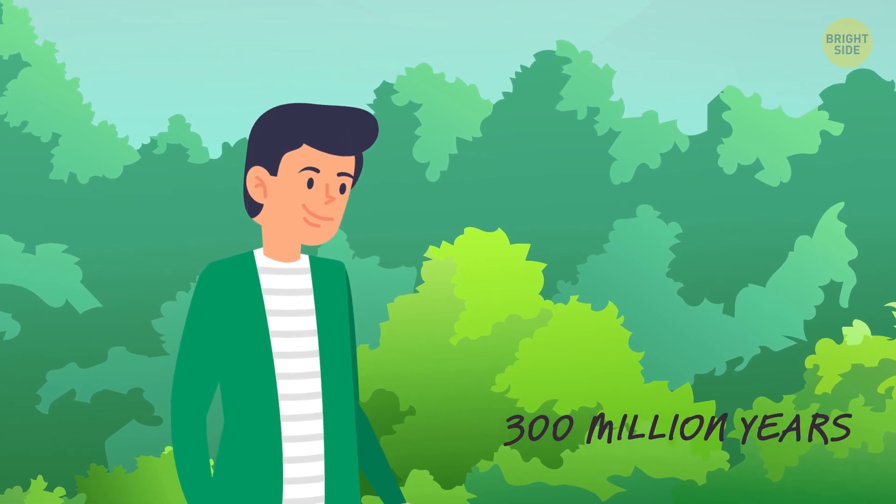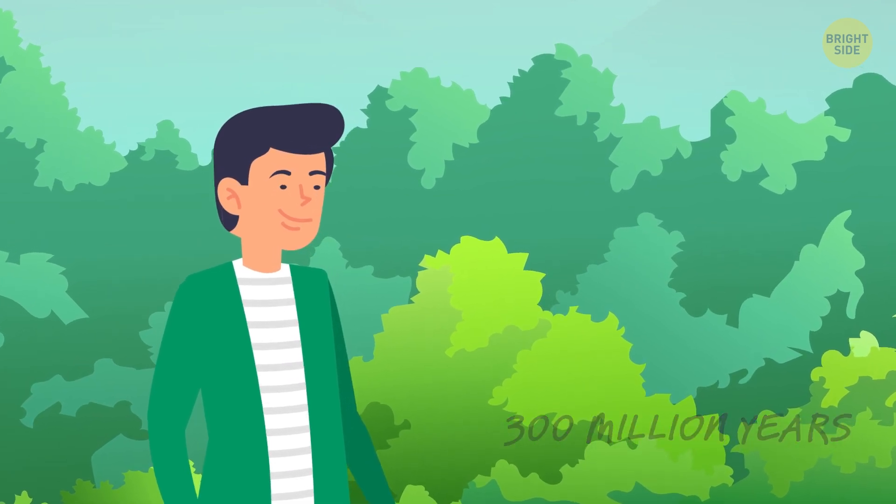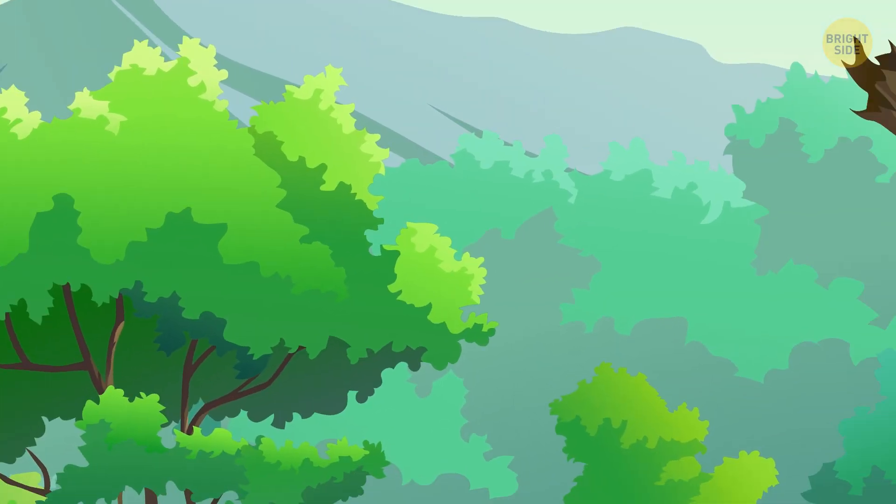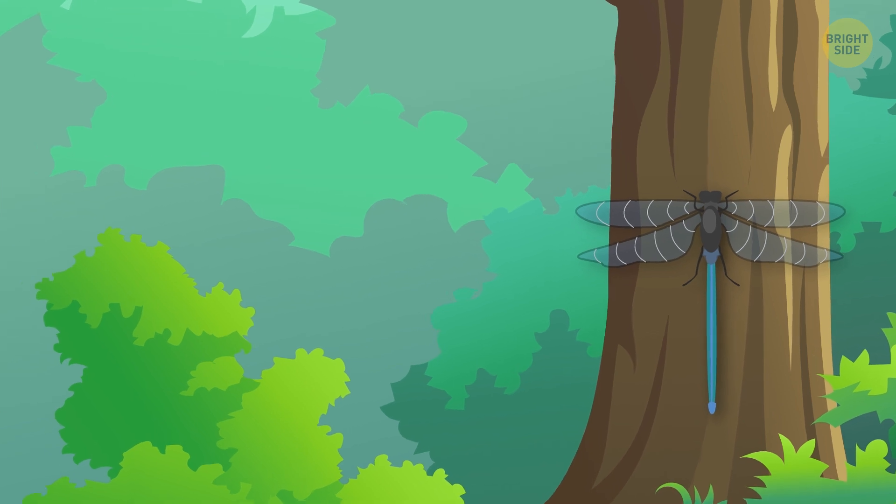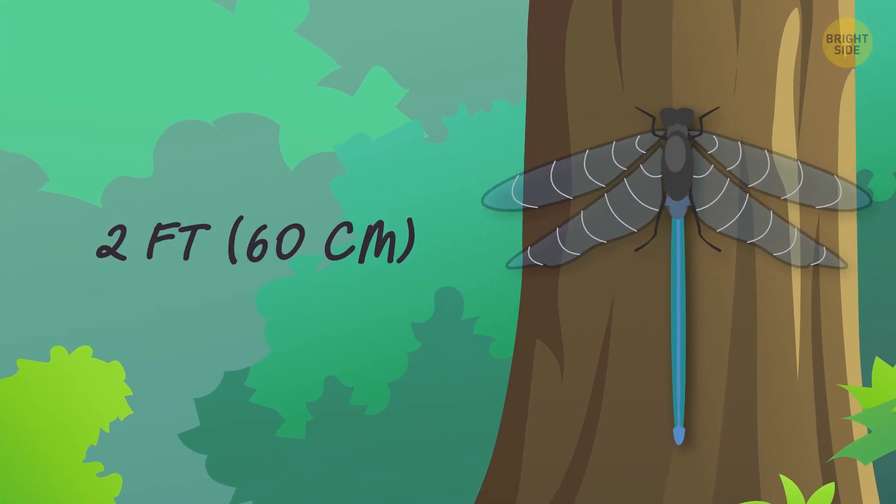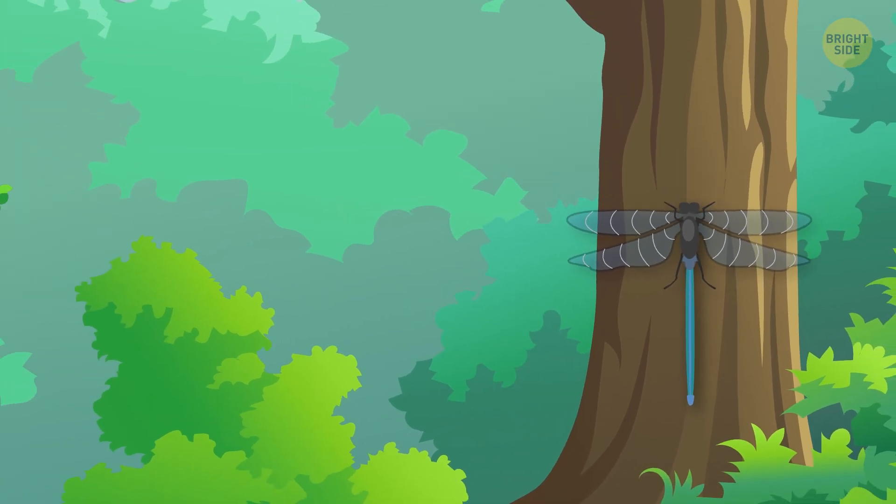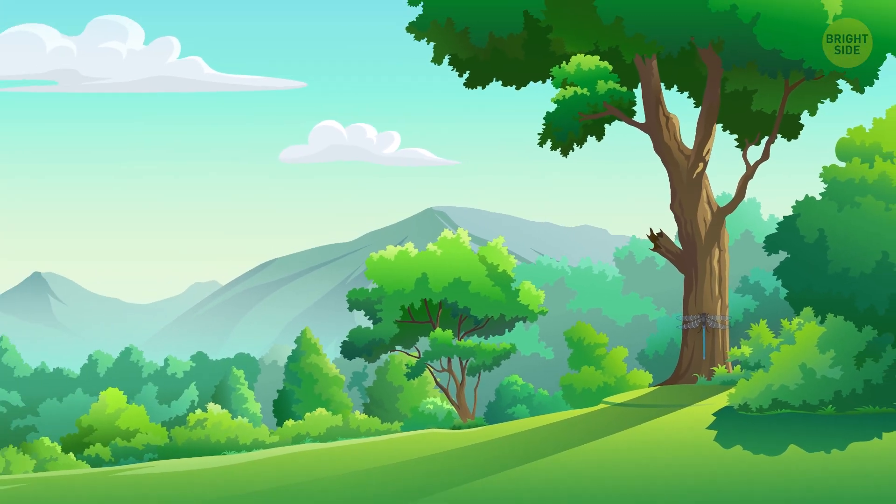The next thing Sam knows, he's 300 million years deep into the past. He's gawking at the sky when something swooshes past him. The creature looks like a dragonfly, but its wingspan is no less than 2 feet. Scientists suppose dragonflies used to grow that massive because of the high oxygen level in the air in those times.